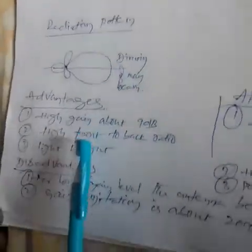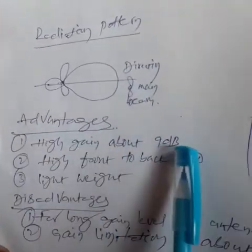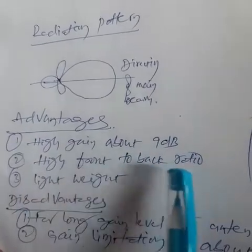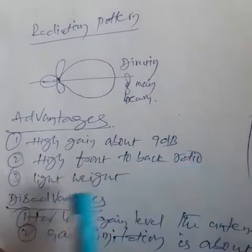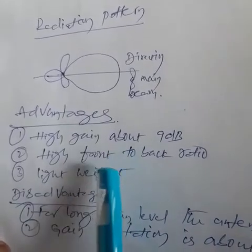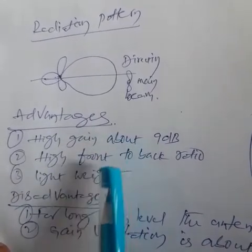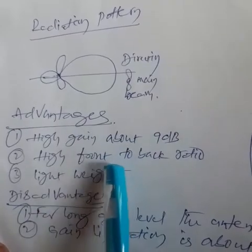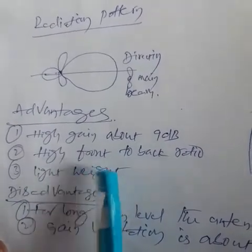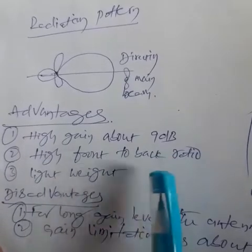The advantages of the Yagi-Uda Antenna are: high gain of about 9 dB, high front-to-back ratio, and light weight. It is lightweight because the Yagi-Uda Antenna is made with the help of aluminum tubes. That is why it is also very cheap in cost.